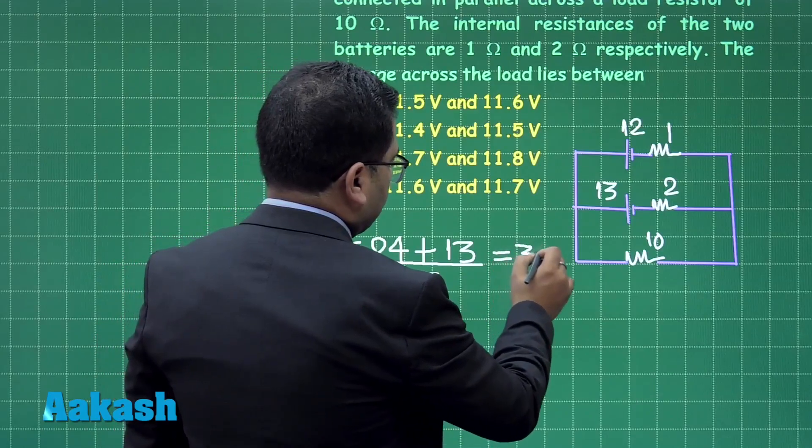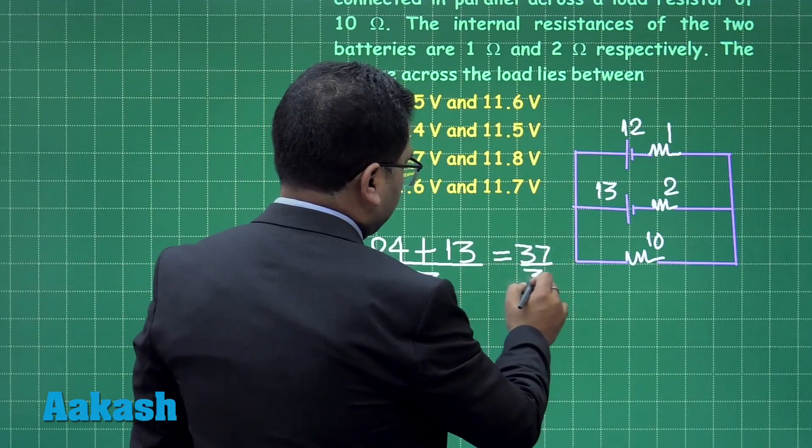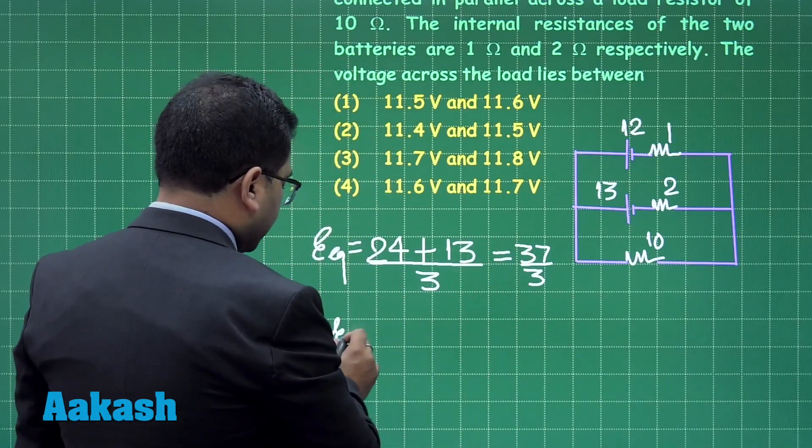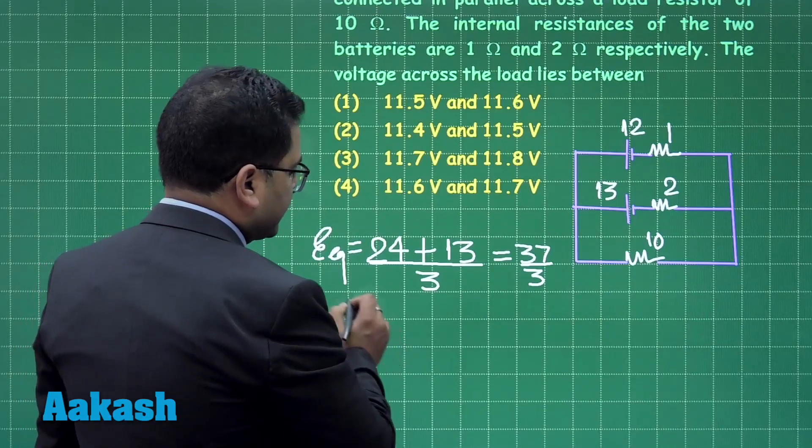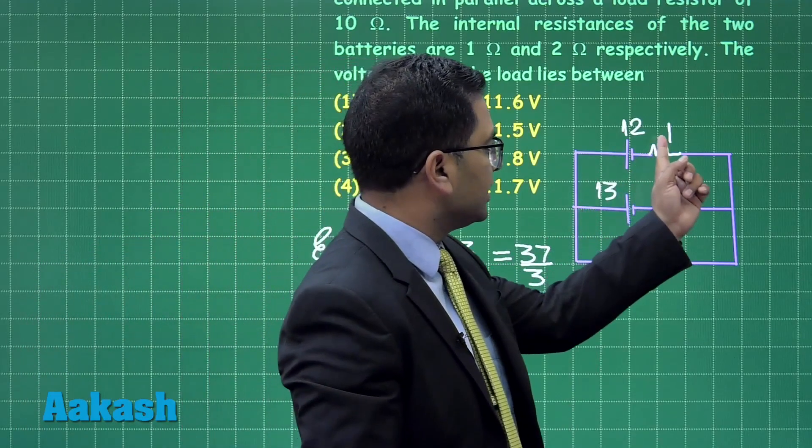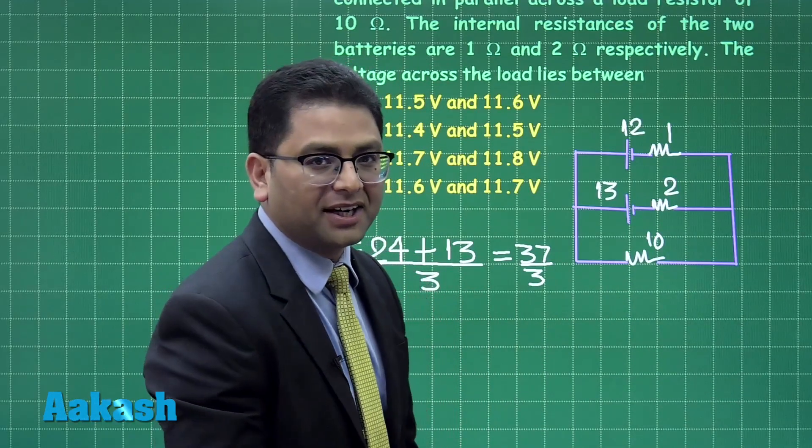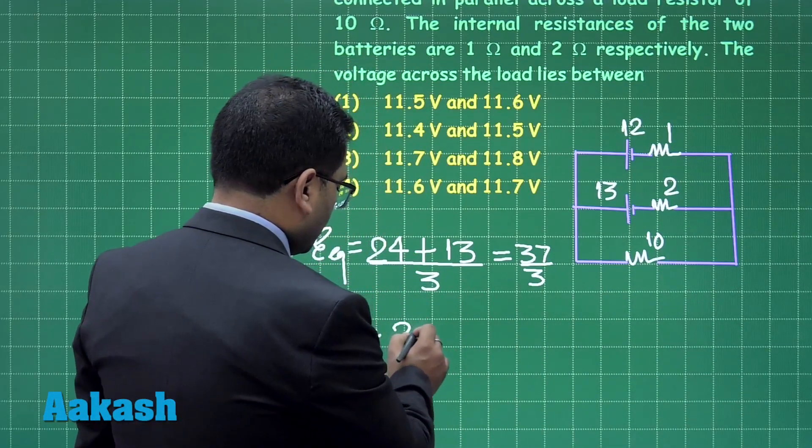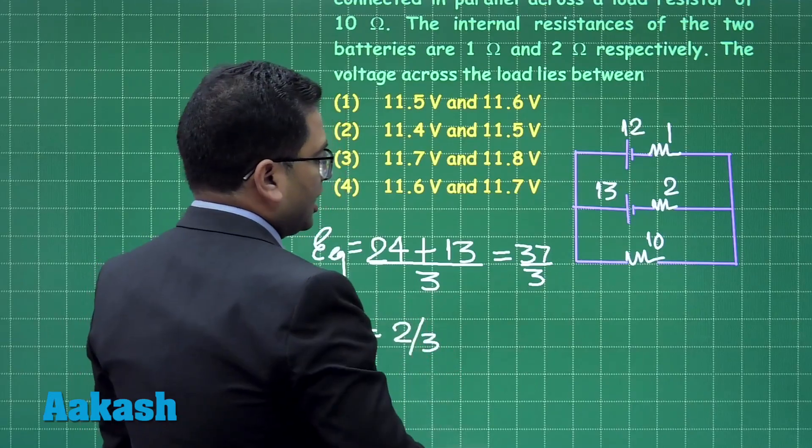And this is coming out to be 37 divided by 3. Likewise, let's even calculate the equivalent resistance and that's a straight way the combination of parallel formula goes right. So that's going to be 2 divided by 3.